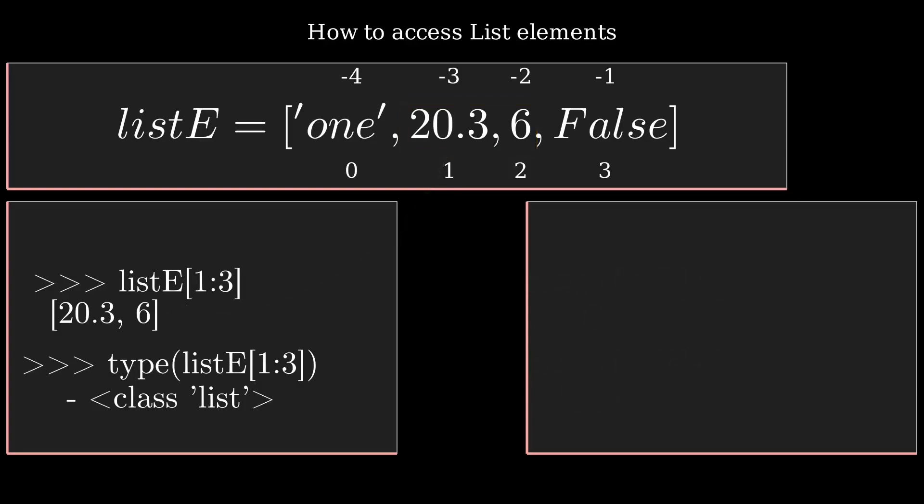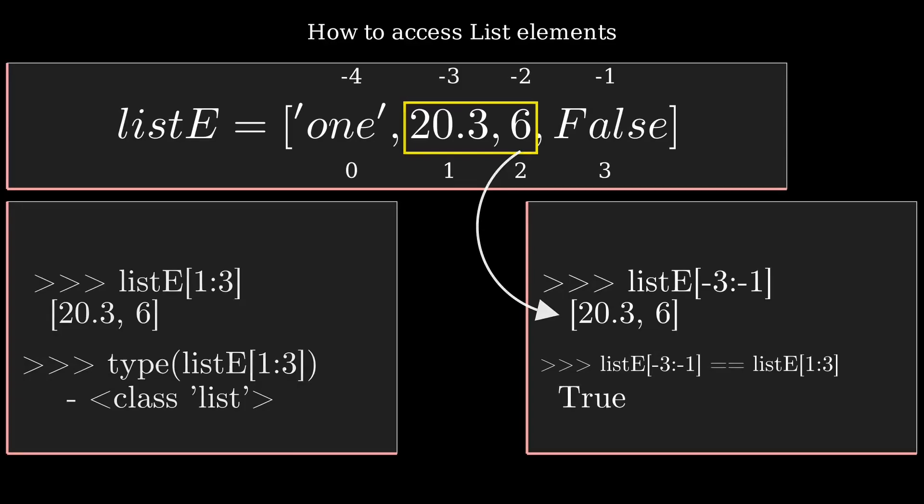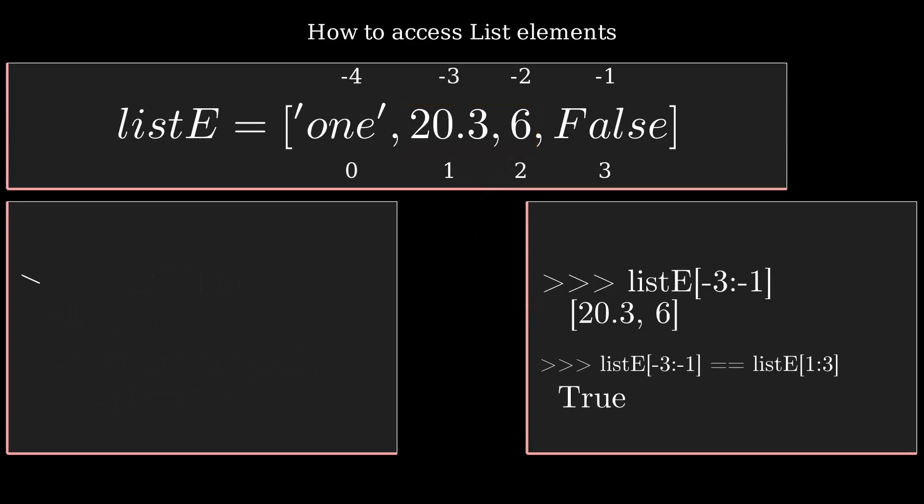You can also use negative indexes in the slicing method. Pass minus three colon minus one to return values from index minus three and minus two. The list returned with negative indexes and positive indexes are the same, that's why it will return true if you compare both lists.